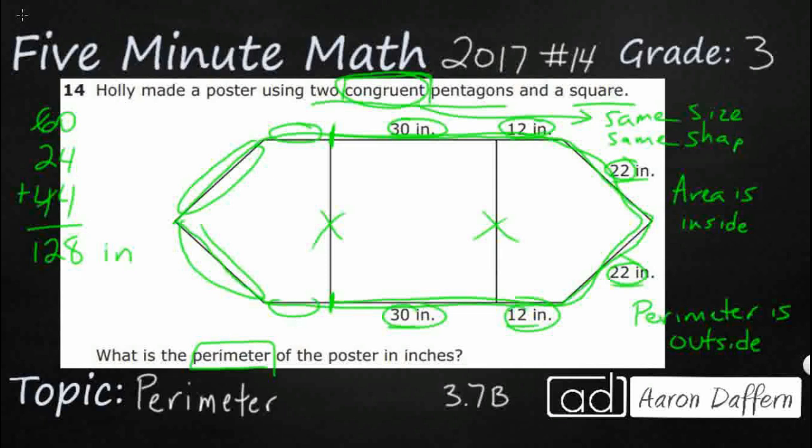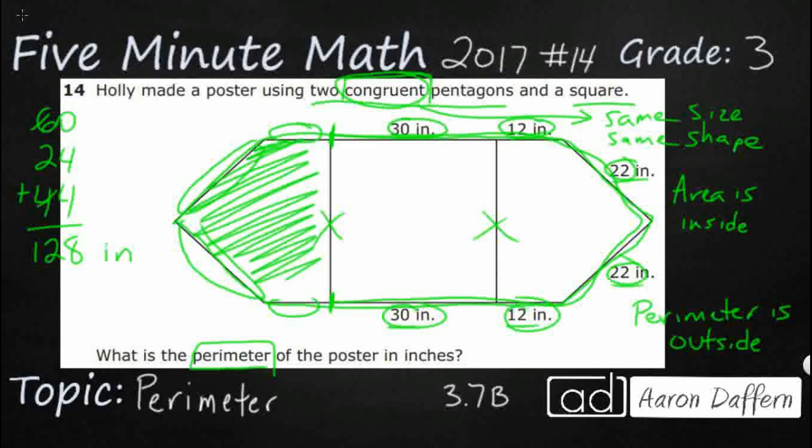So when we have two congruent shapes, they're literally the exact same size, they're the exact same shape. So this pentagon right here is congruent with this pentagon right here. How does that help us?